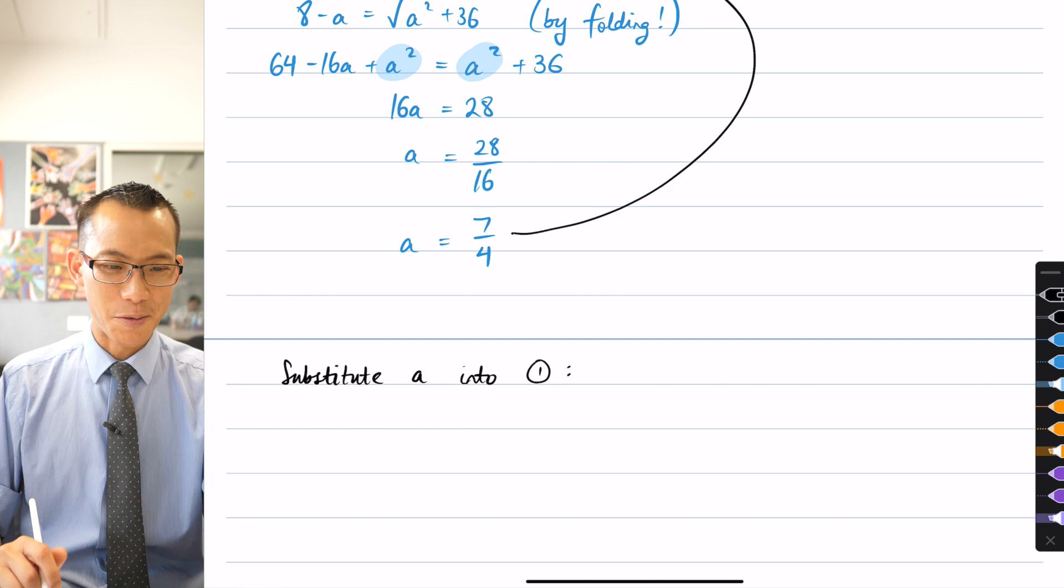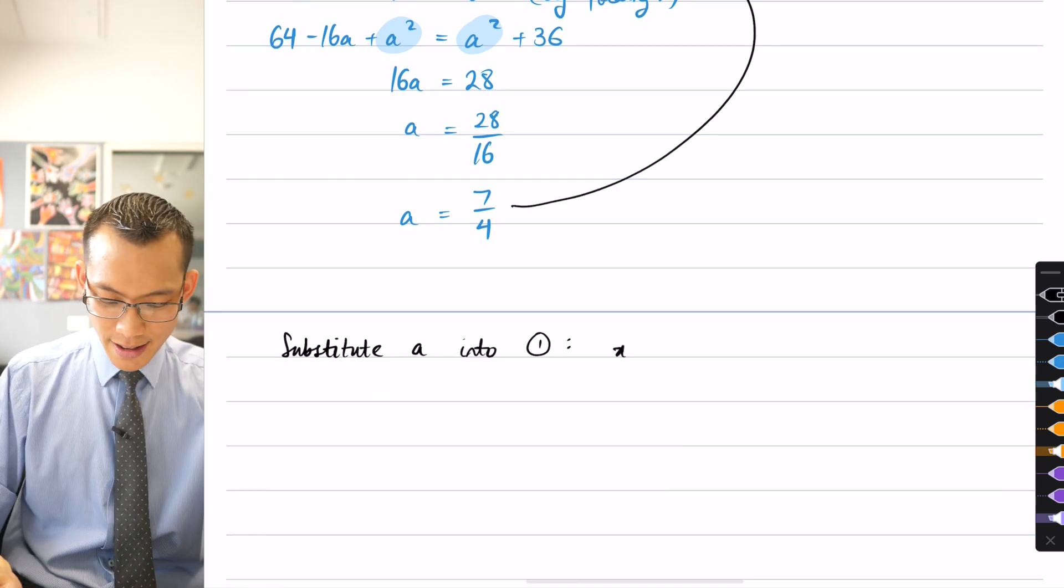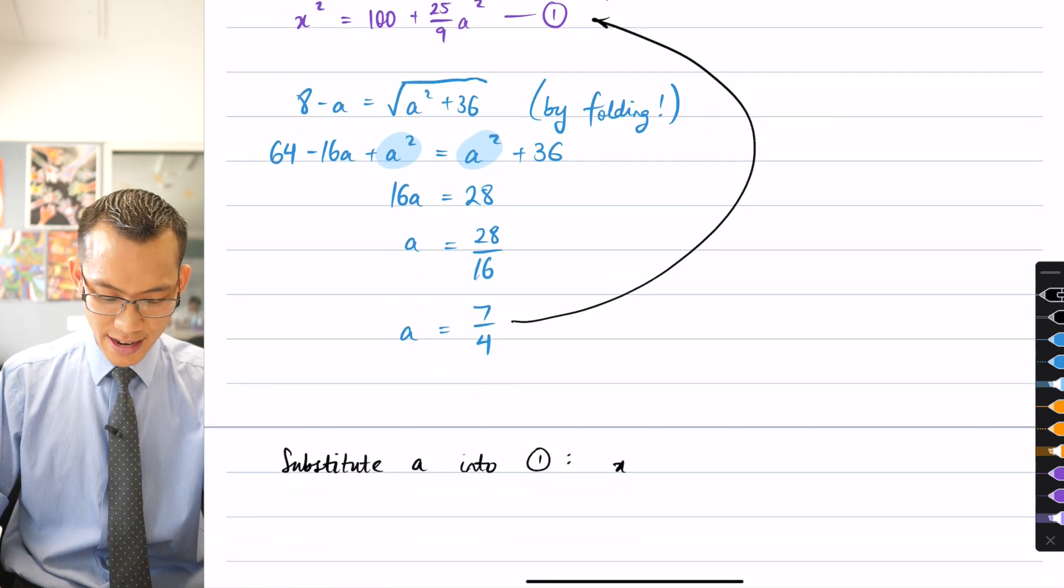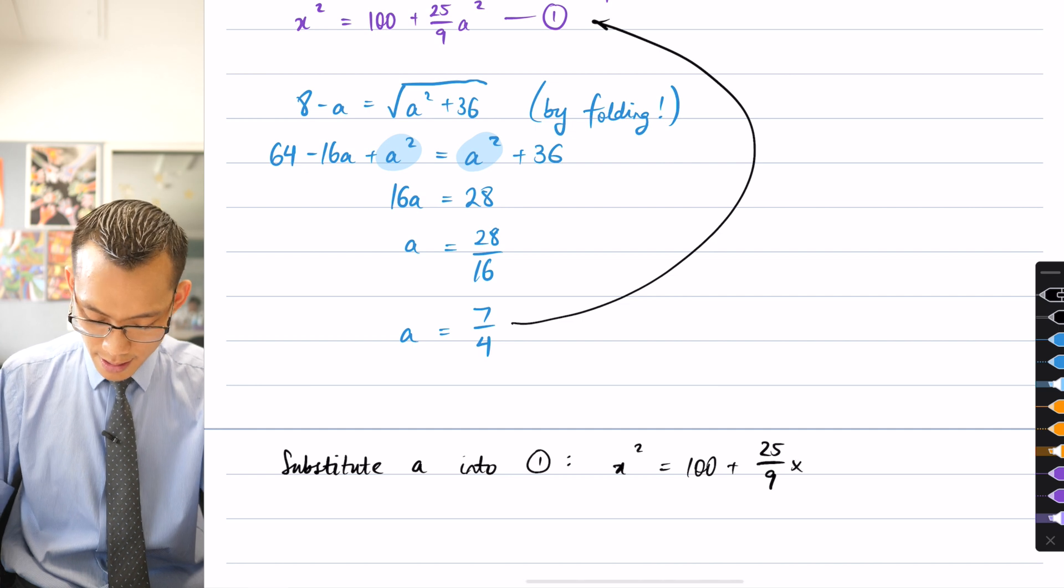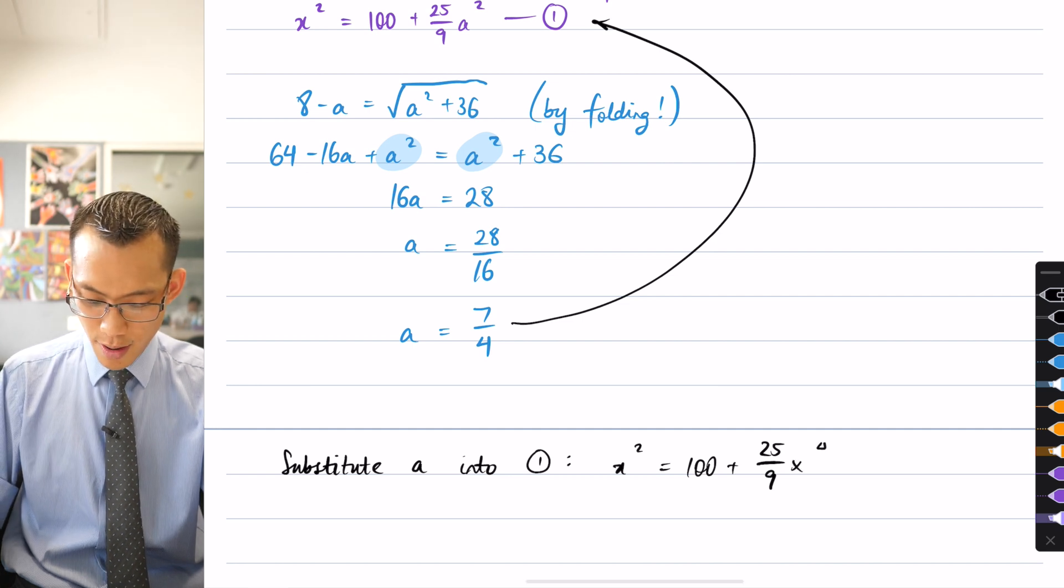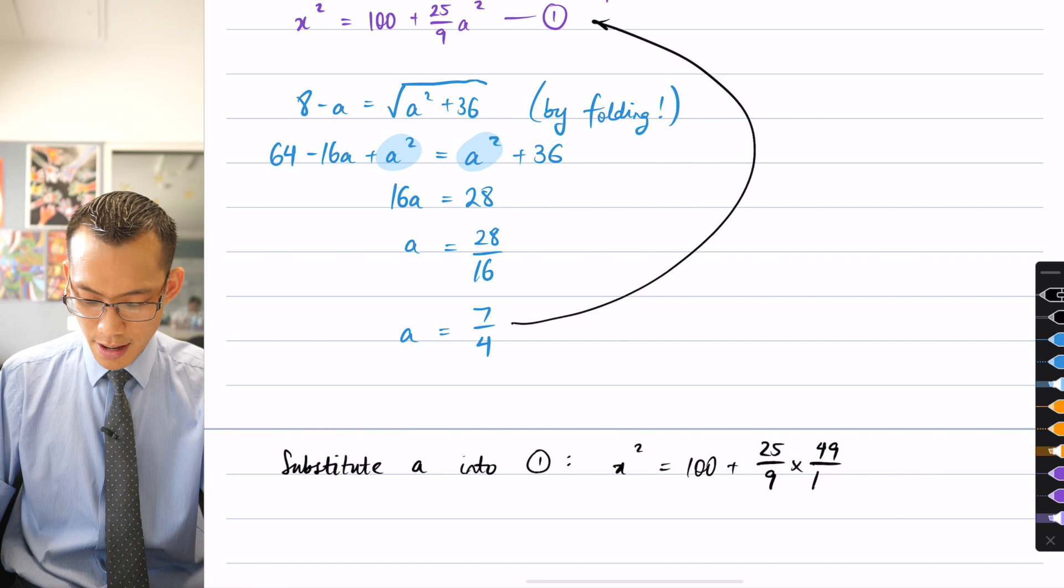So let's just write that. Substituting A into 1, what do I get? Well, I'm going to get, let's see here, you can see I've got the X squared on the left-hand side. It's 100 plus 25 on 9 times, here comes A squared, so it's 49 on 16.